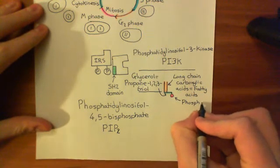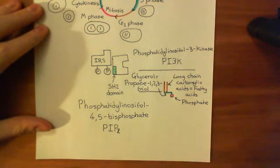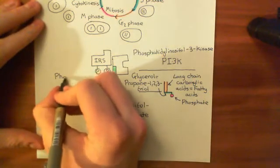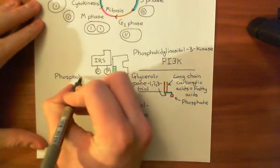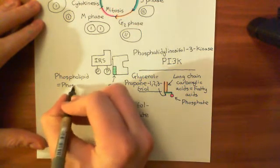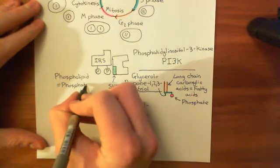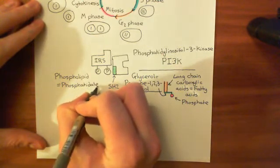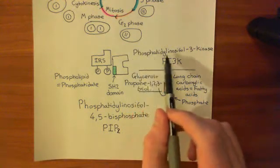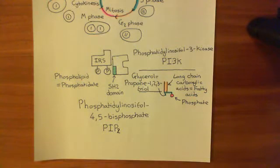The old name for a phospholipid was to call it a phosphatidate molecule. Although you'll never hear anyone refer to a phospholipid as a phosphatidate molecule today, when people refer to modified phospholipids — phospholipids with a little bit extra added onto them — we use the term phosphatidate all the time. That is where the prefix phosphatidyl comes from: it just means phosphatidate with inositol stuck onto it.